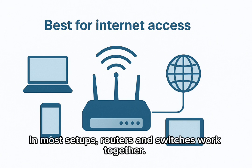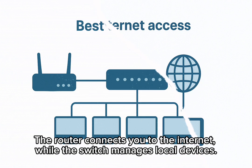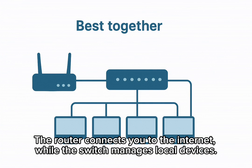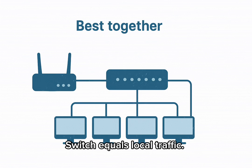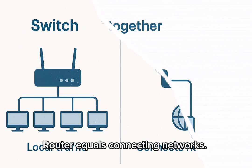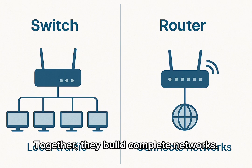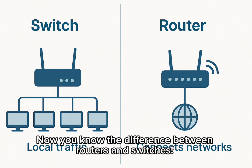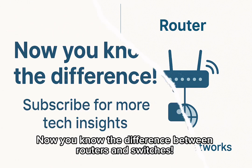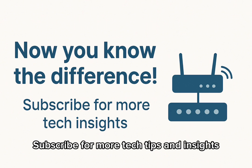In most setups, routers and switches work together. The router connects you to the internet, while the switch manages local devices. Switch equals local traffic; router equals connecting networks. Together, they build complete networks. Now you know the difference between routers and switches. Subscribe for more tech tips and insights.